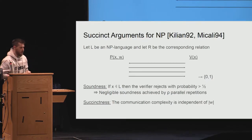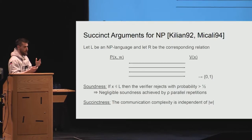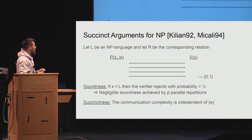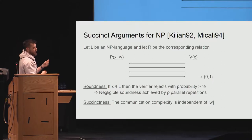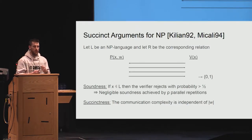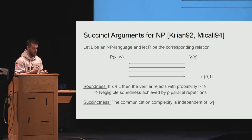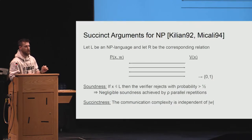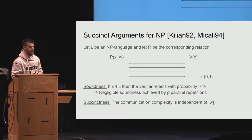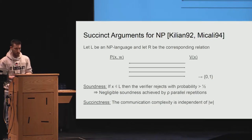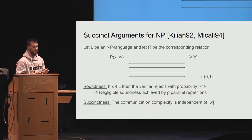This is one of the classical building blocks in cryptography with plenty of usage. If L is an NP language, a succinct argument is defined as an interactive protocol between a prover and a verifier. The prover gets a statement and additionally a witness for such a statement. In the end, the verifier is either convinced or not of the membership of the statement. The soundness requirement is that if X is not in L, then the verifier should reject with probability greater than half. Succinctness requires that the communication complexity be independent of the size of the witness.